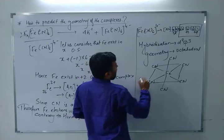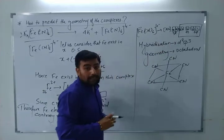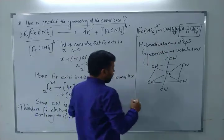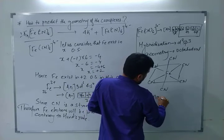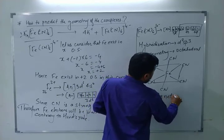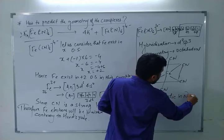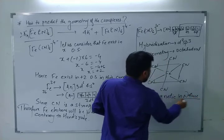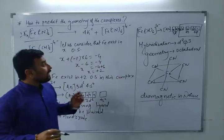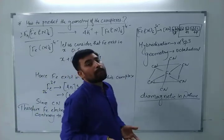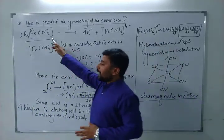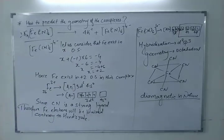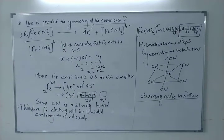Now what about the magnetic properties? All the electrons are paired here, so this complex is diamagnetic in nature. It is diamagnetic because all electrons are paired. In this way you can predict the geometry of any compound — I have shown you how to predict the geometry of K4[Fe(CN)6].